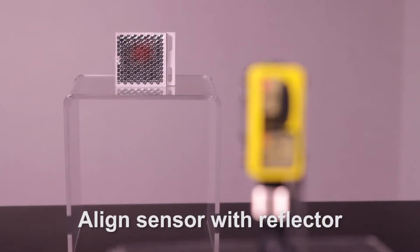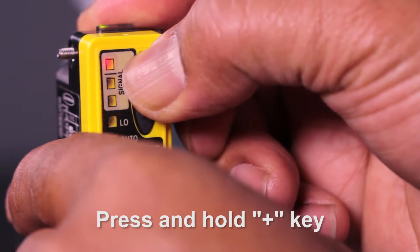Start off by aligning the sensor with the reflector. Then press and hold the plus button until the top two LEDs flash.